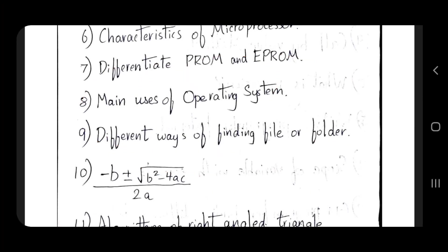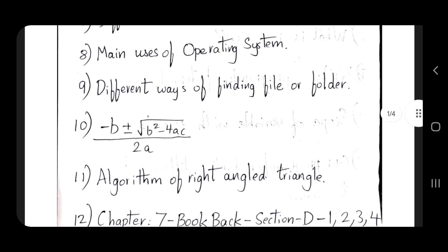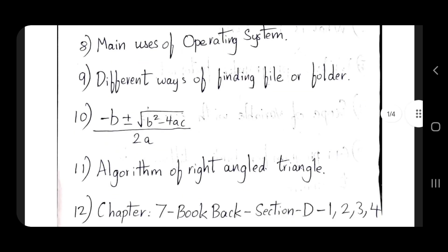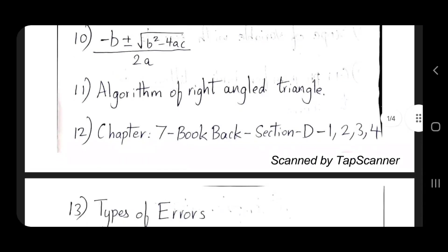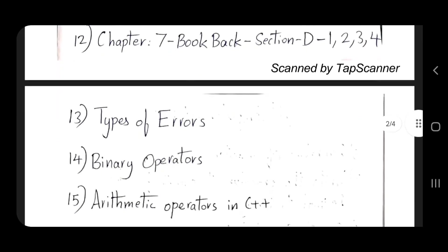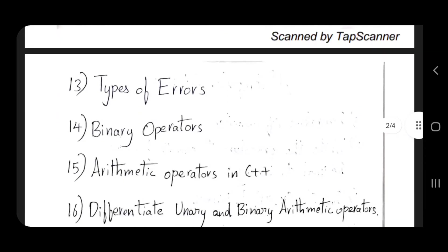We will cover the first angel chapter. In the path of the question, it is an algorithm - either a question from the book back. The algorithm for a right angle triangle is another book back question. Chapter 7 book back section covers: types of error in C++, binary theory, arithmetic operators.